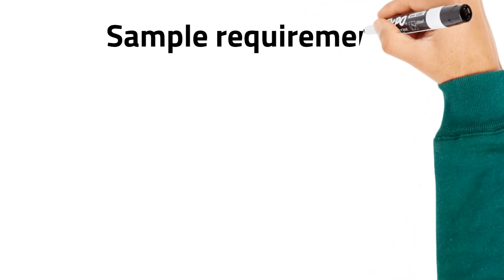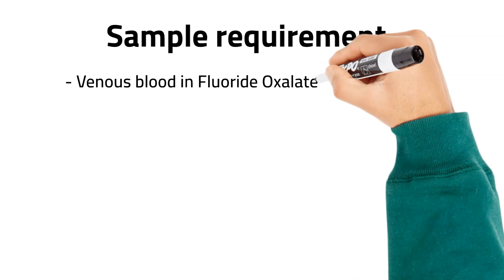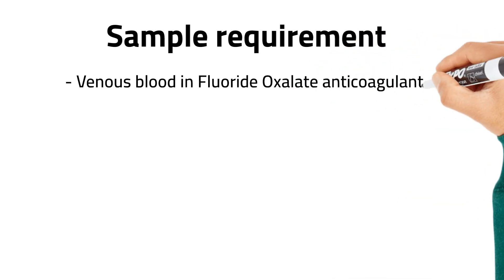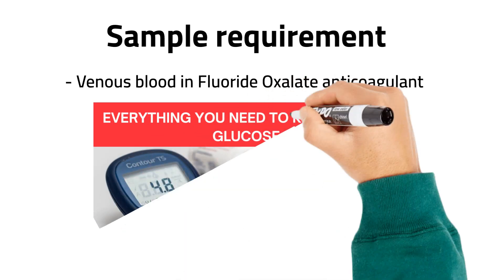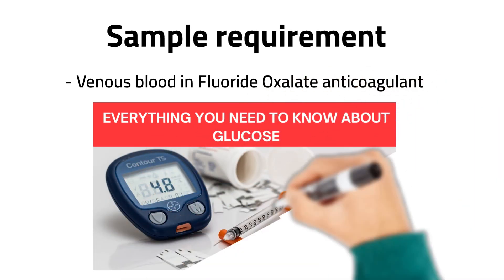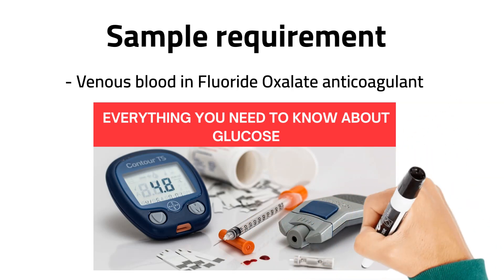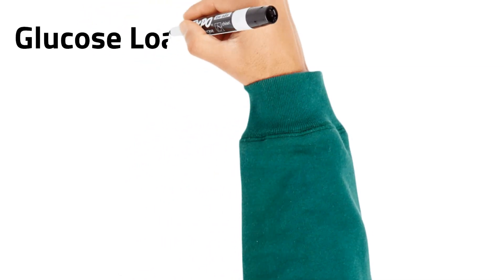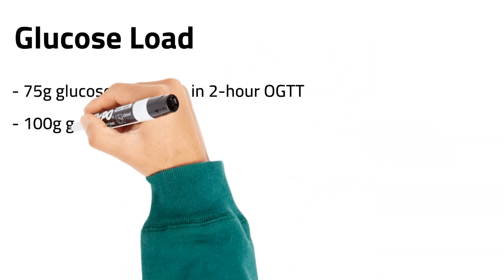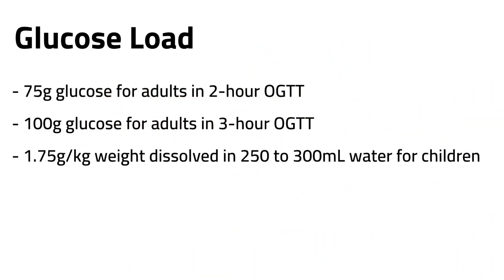The required sample tube is fluoride oxalate, as the glucose cut-off values are based on this specimen type. For further details, please watch the video on glucose covering homeostasis, metabolism, clinical indications, pre-analytical requirements, and the principles of analytical methods used to measure glucose — the link is in the description below. The recommended glucose load is 75 grams for adults, and 1.75 grams of glucose per kg of weight dissolved in 250 to 300 ml of water in children.